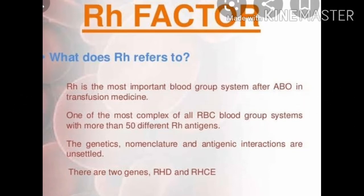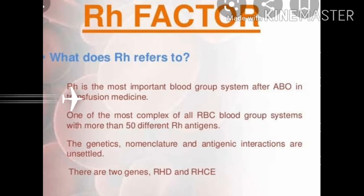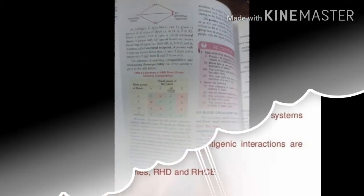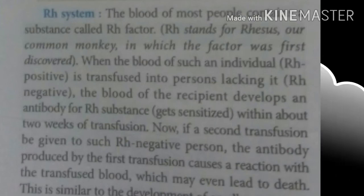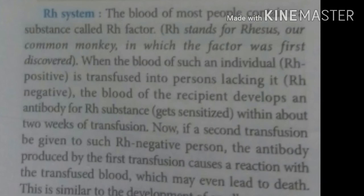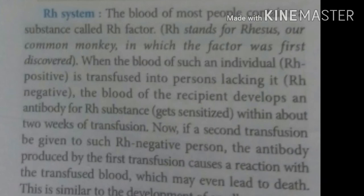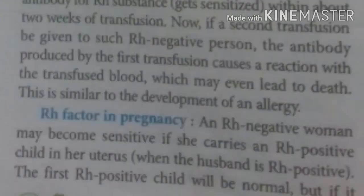The RH factor was first discovered in 1940 and is named after the Rhesus monkey in which it was discovered. This factor is actually a group of antigens present in the plasma membrane of the red blood cells. Persons having the RH factor are called RH positive (RH+), while a person who lacks this factor is called RH negative (RH−).